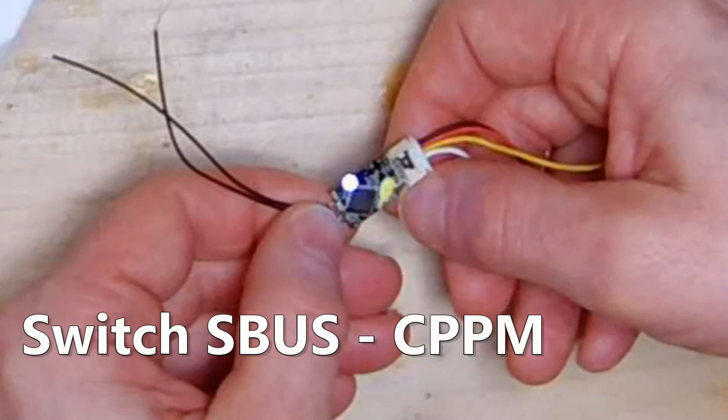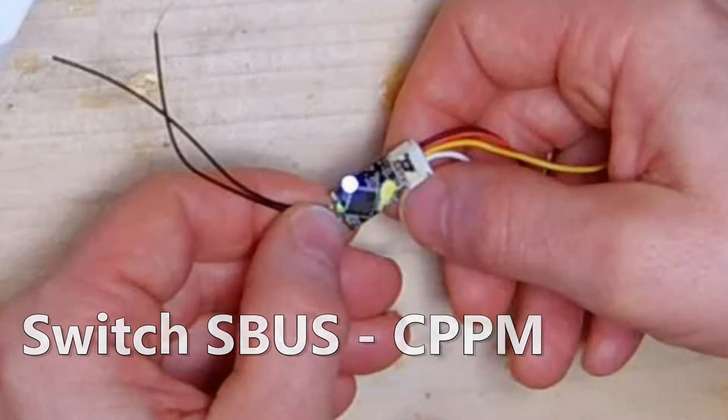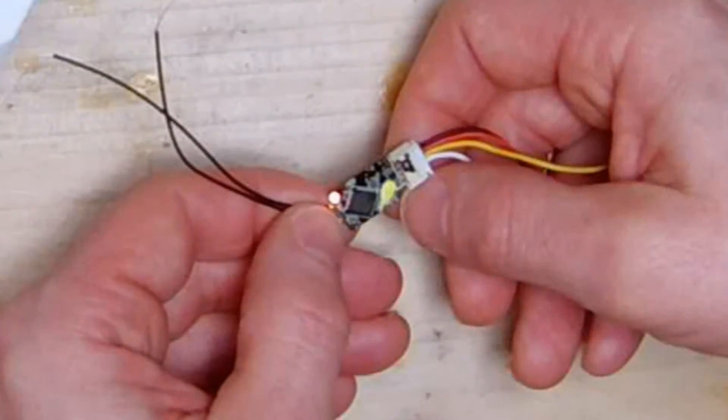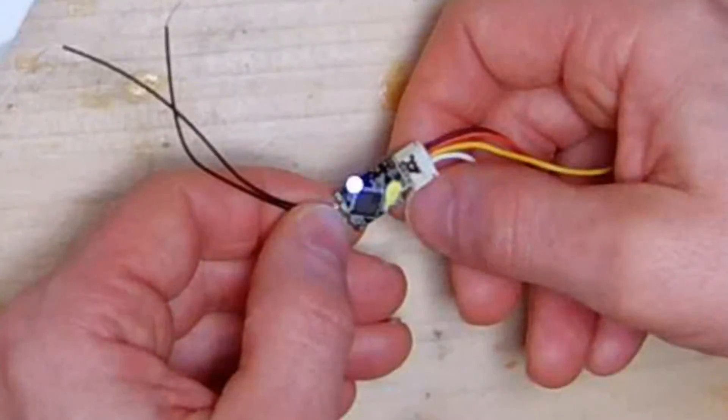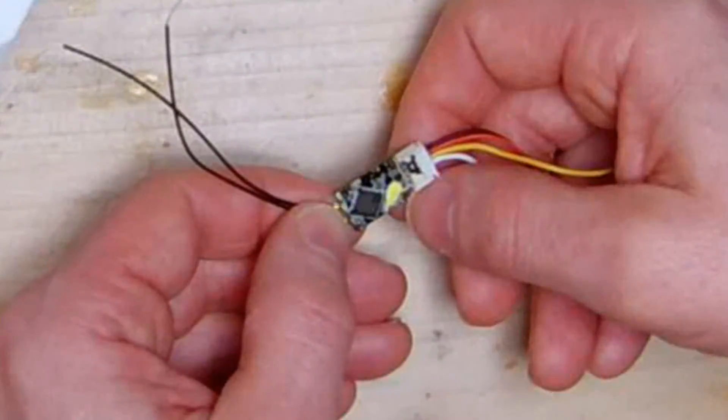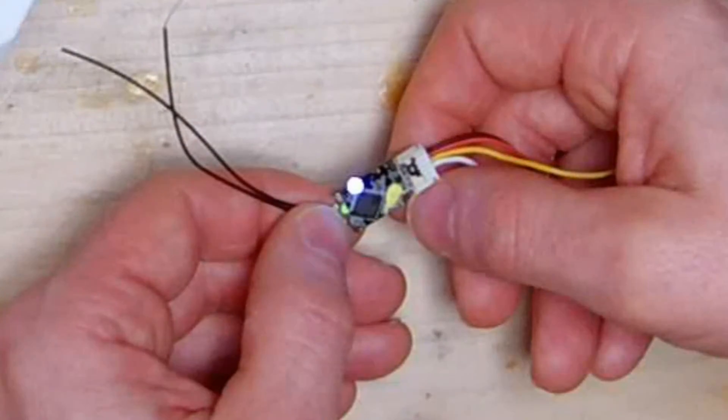To switch between S-Bus and C-PPM mode, just hold the button for 4 seconds. A fast blinking blue light indicates the RX is switching between the modes. Solid blue means S-Bus mode, no blue light means C-PPM mode.